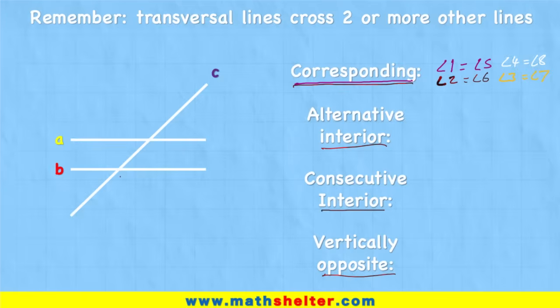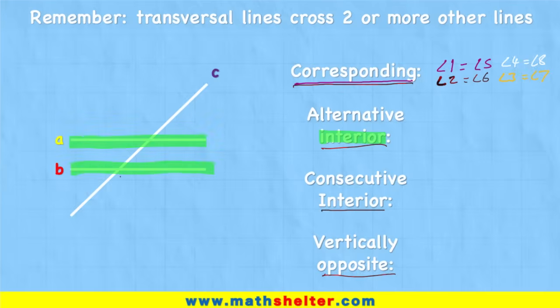Let's have a look at the alternative interior angles. What's an interior angle? Interior is the inside — your interior in your house is the inside of your house, and an interior decorator is someone who decorates houses inside. So we have to look at the inside angles. If these are my parallel lines, only the angles inside — this one, this one, this one, and this one — are the ones we would consider interior.